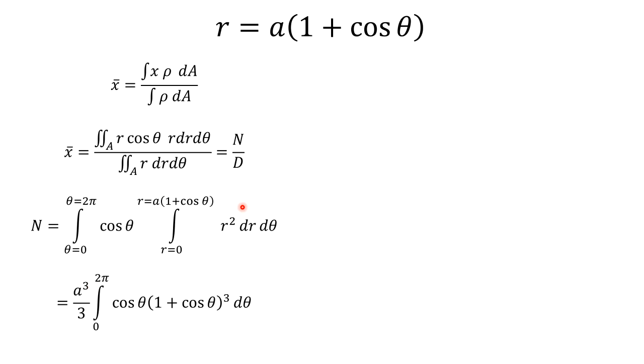So integration of r squared will be r cubed by 3. We'll get a cubed by 3 constant outside, cos theta into bracket 1 plus cos theta cubed d theta. Now we will integrate this with respect to theta, so we get this.